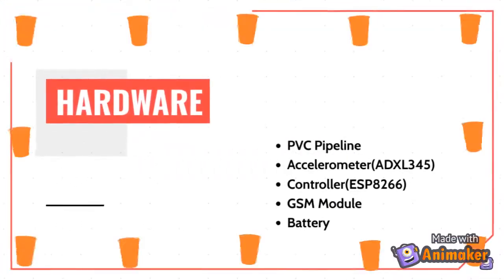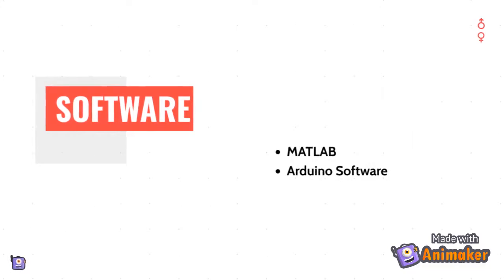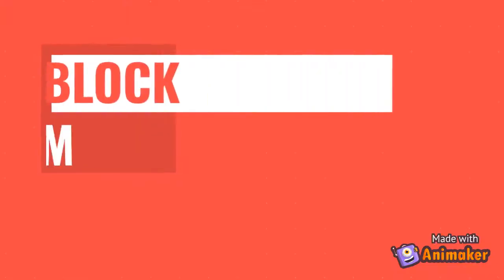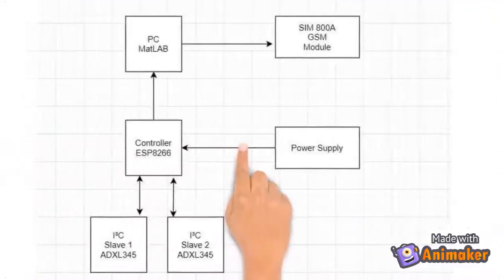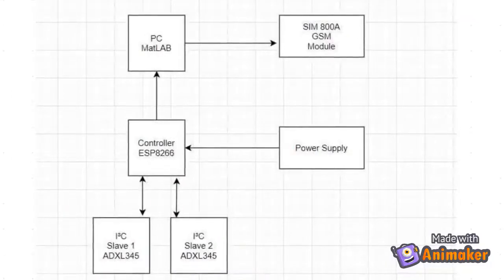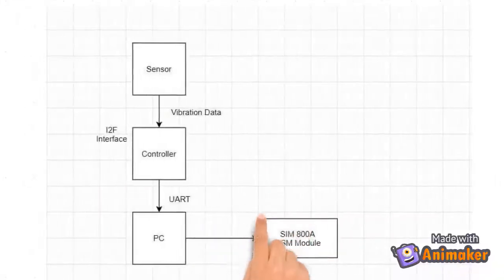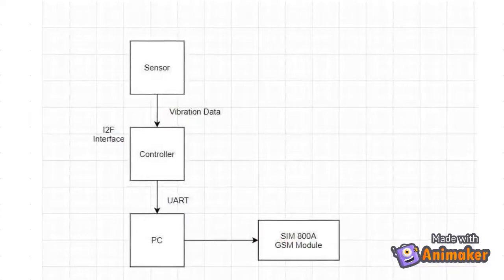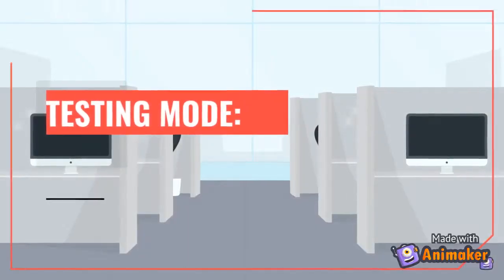The localized location of the leakage in a pipeline can be determined by using surface accelerometer sensors. Here, we develop an underground pipeline leakage detection system using accelerometer sensors. The vibration signals from the leak point in the pipeline are detected by the accelerometer sensors placed at finite known distances. The vibrations acquired are sent to a PC via serial communication, and the vibration readings can be seen in the serial monitor of the Arduino IDE.